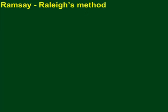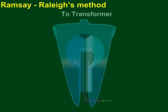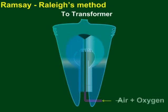Ramsey Raleigh's Method: A mixture of air and oxygen is constantly admitted into a glass globe of about 50 liters capacity.